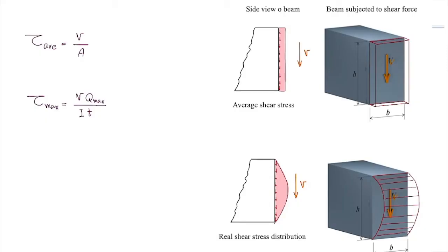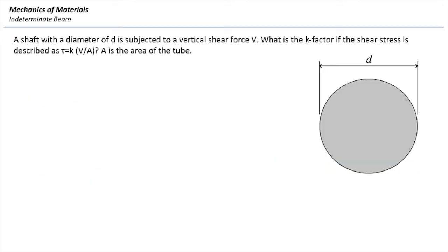So I want to know if I have this equation for shear stress, which we proved in the previous lecture, VQ over IT, and describe that in a way like this: a K-factor multiplied by average shear stress, V over area. How much is that K-factor for this shaft?